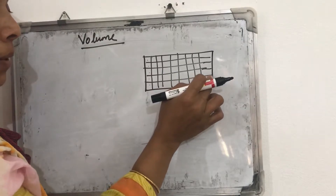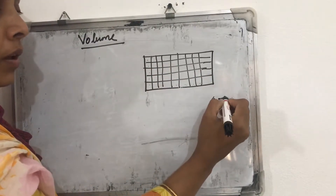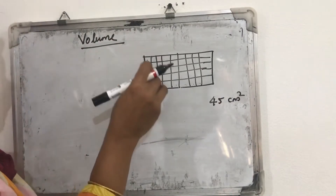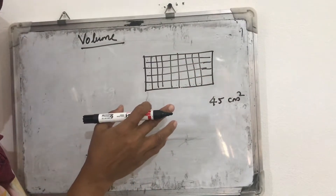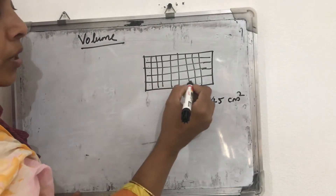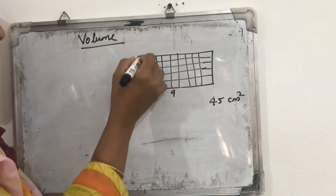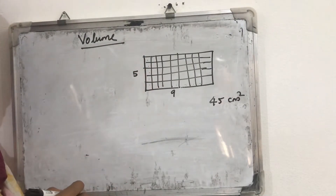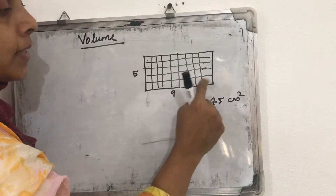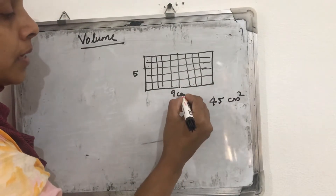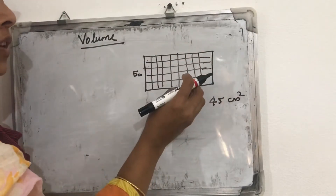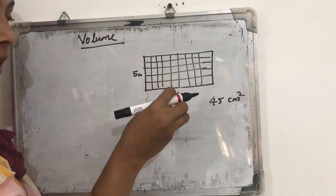To get the total number of unit squares, we multiply nine by five: 9 × 5 = 45, so the area is 45 square centimeters. From this counting method, we then find a general equation. If nine unit squares are arranged along the length, the length is nine centimeters; if five unit squares are arranged along the breadth, the breadth is five centimeters. So the total unit squares = 9 × 5 = 45.